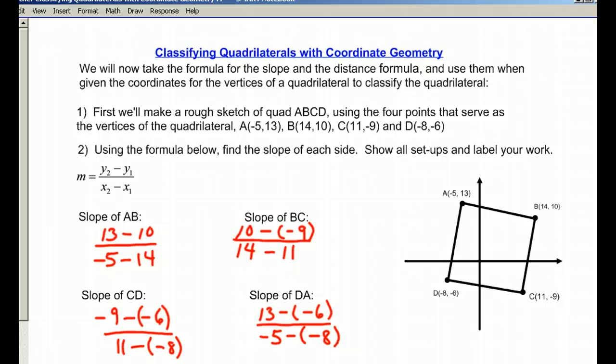Now to find the slope of each side, I just use the formula for the slope of a line, remembering that y's go over x's. I've already set them up for each one of these sides, and you can see that this one right here ends up being 3 over negative 19. The slope of BC ends up being 19 over 3.